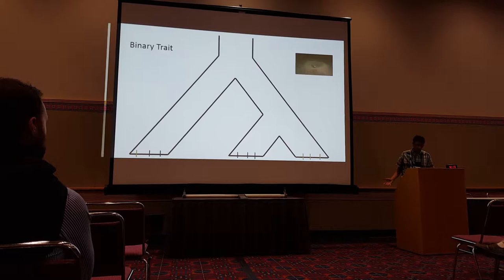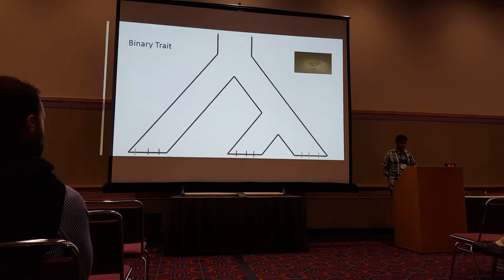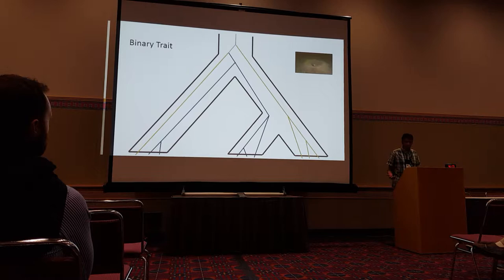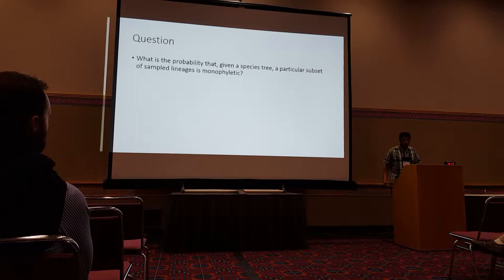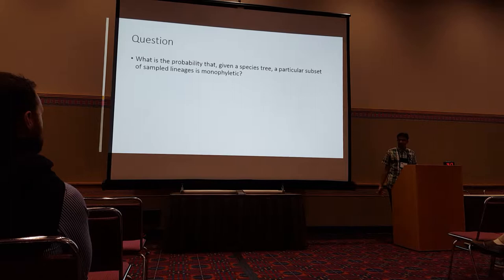So if you have a binary trait distribution like the colors at the bottom of the slide, it might look weird, but if you come across a locus for which the gene tree groups those lineages together, you might be interested — that might be important for selection or for this particular trait. The question I ask is: what's the probability that, given a species tree under the multi-species coalescent, a particular subset of the sampled lineages is monophyletic? The subset could be species-specific or anything else.